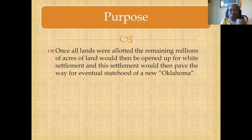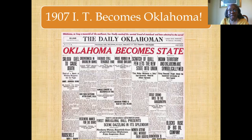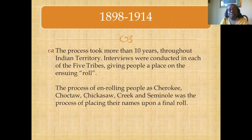The concept was basically to open up millions of acres for thousands of white settlers to come into the territory and create a new state. The two territories — Indian Territory and Oklahoma Territory — became a state in 1907. This process of allotting land and determining who was eligible, and creating these rolls of eligible people, took more than 10 years.